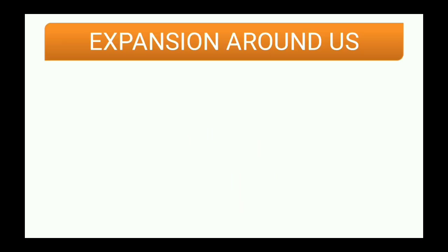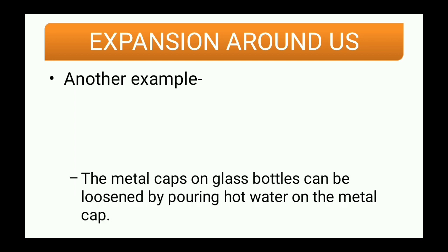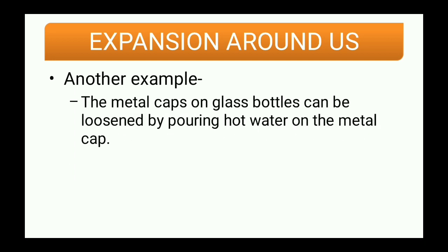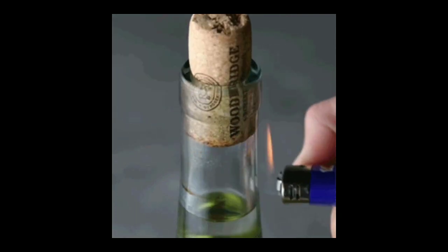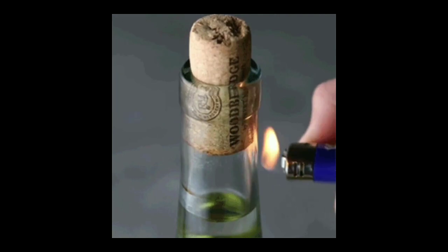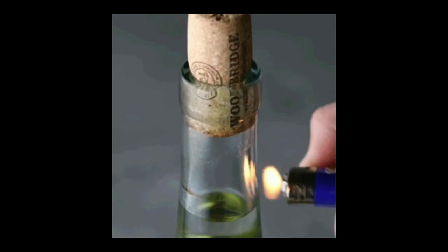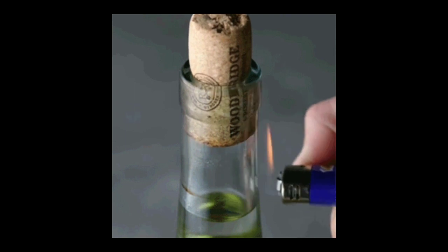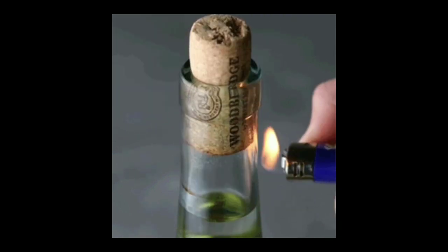With an example: the metal caps on glass bottles can be loosened by pouring hot water on the metal cap. So if we want to open glass bottles with a metal cap, you can pour hot water over it to open it. What about glass bottles with a wooden cork? Even in case of glass bottles with a wooden cork, we can make use of heat to open the cork. We simply heat the opening end of the glass bottle and the wooden cork comes out automatically.